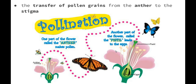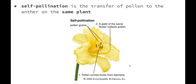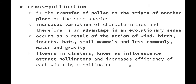Pollination is defined as the transfer of pollen grains from the anther to the stigma. The anther, part of the male flower, produces pollen and delivers it to the stigma, which carries it down to the ovary where a new flower is produced. Self-pollination is the transfer of pollen from the anther to the stigma within the same flower. Cross-pollination is the transfer of pollen to the stigma of another plant of the same species, which increases variation in offspring and is therefore an evolutionary advantage.